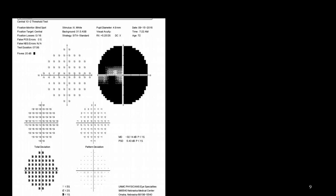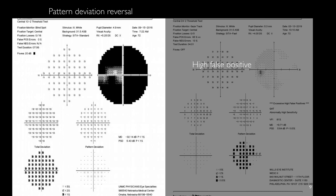This is an example of a patient with advanced glaucoma with dark total deviation, white pattern deviation, and is called pattern deviation reversal.